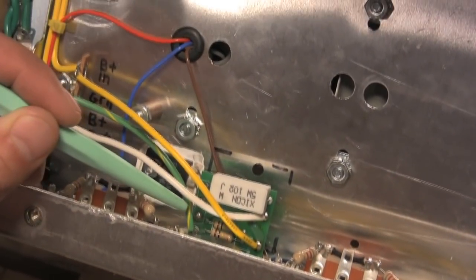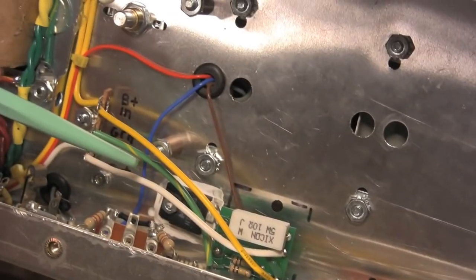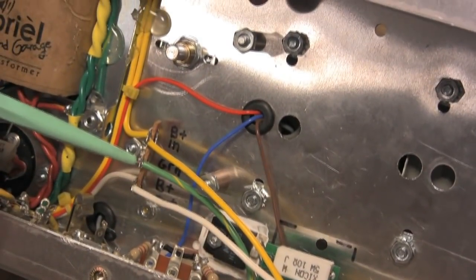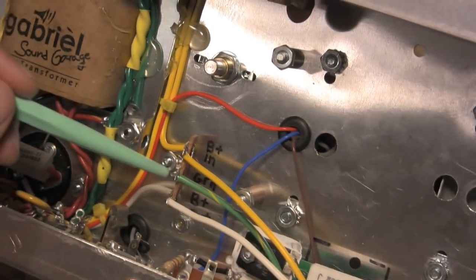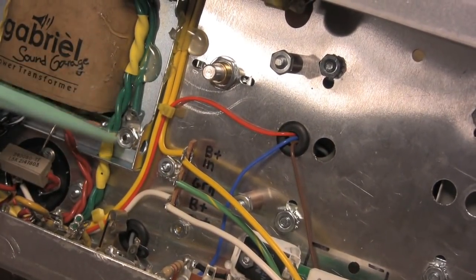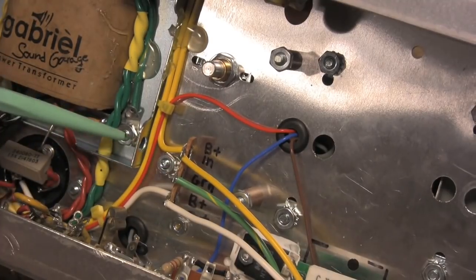We have a ground connection going from the board, the VVR board, to somewhere next to where you collect the grounds for the high voltage for the power transformer grounds. So, it's pretty close to here.